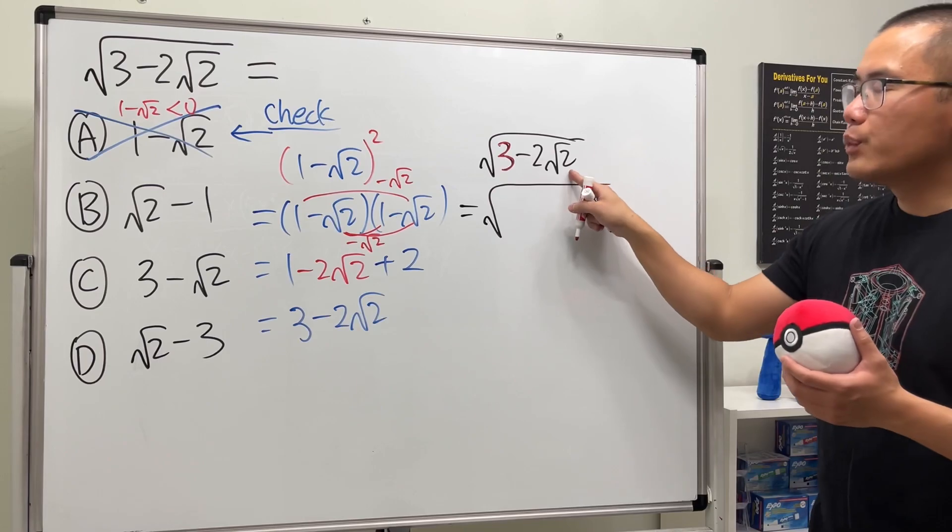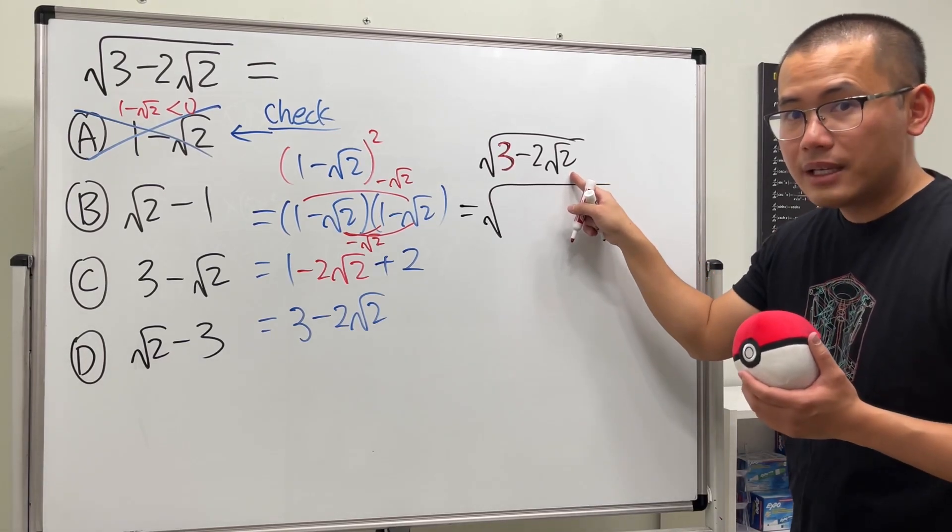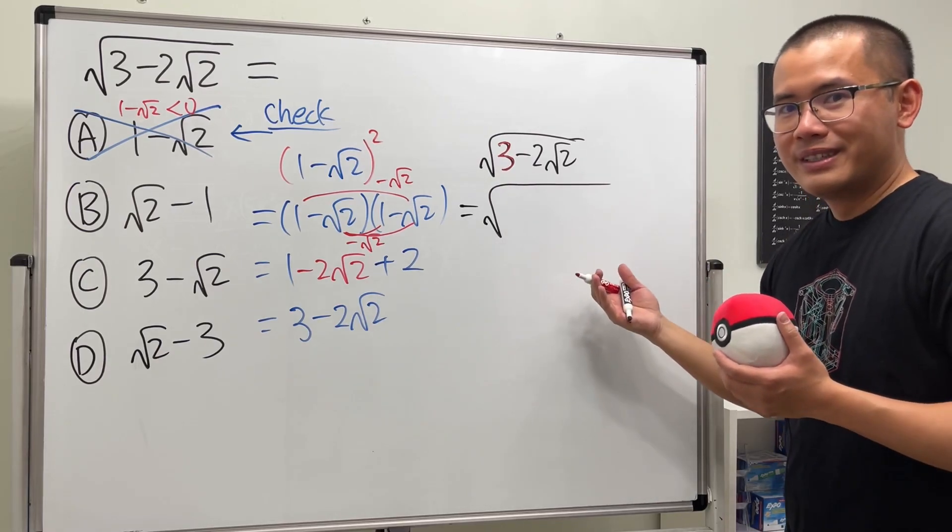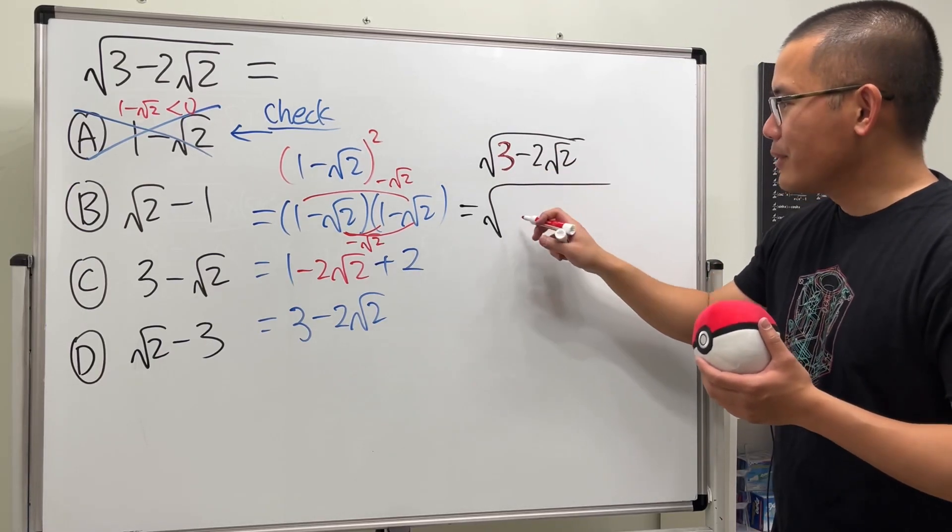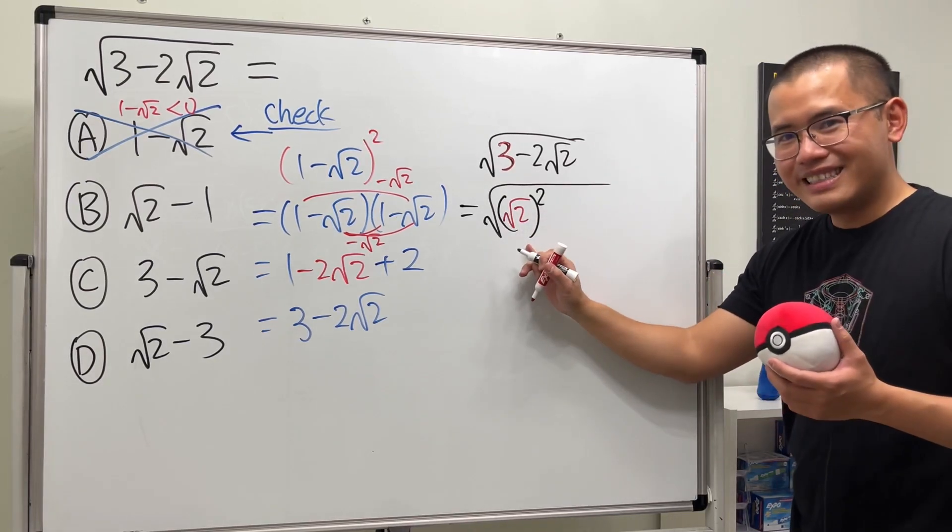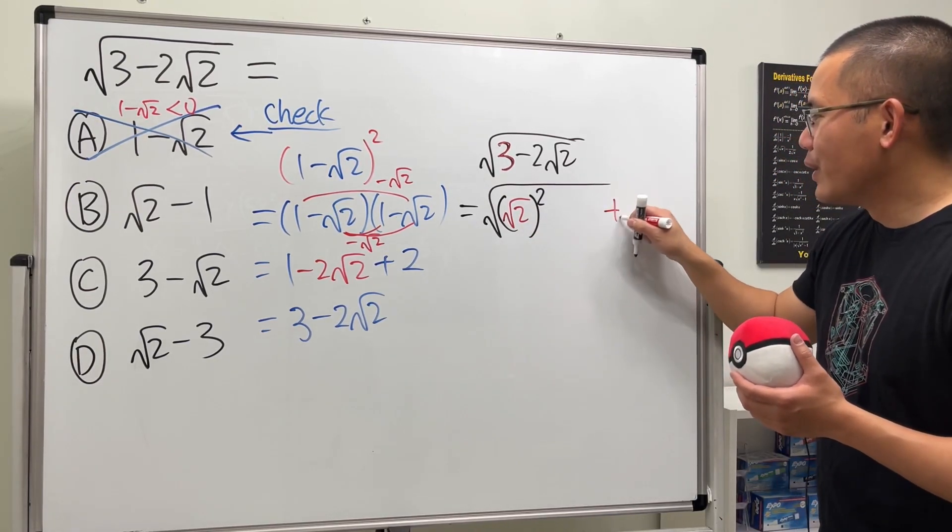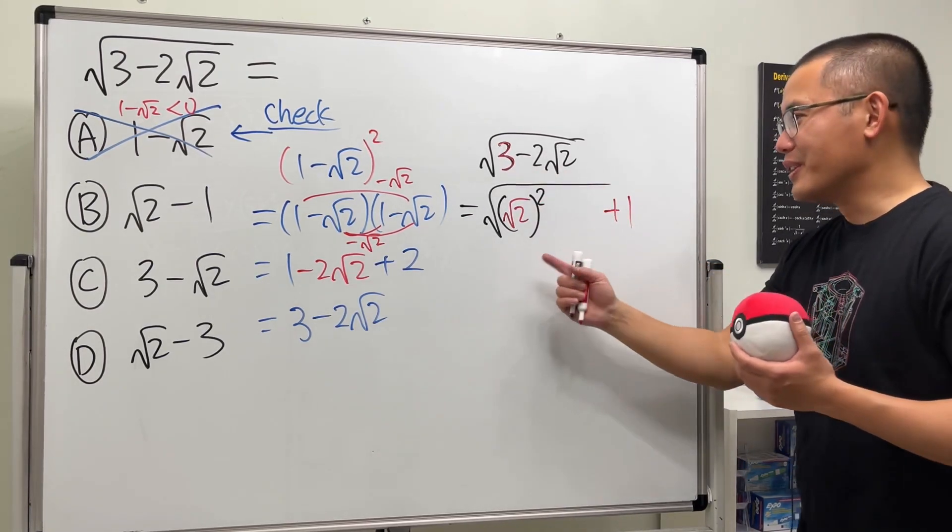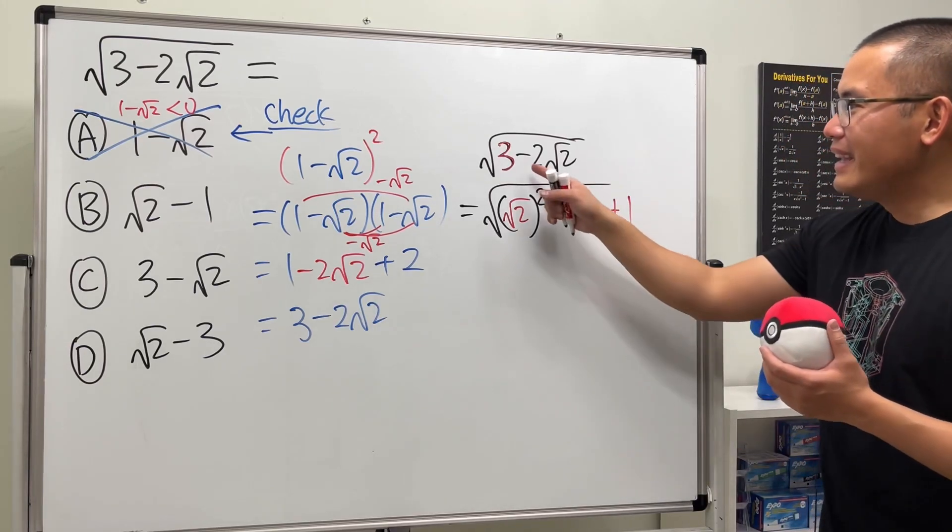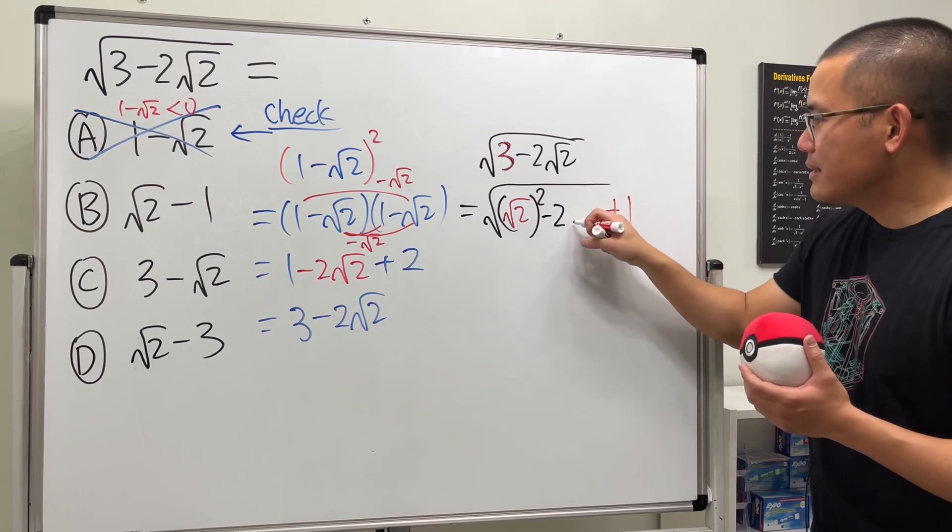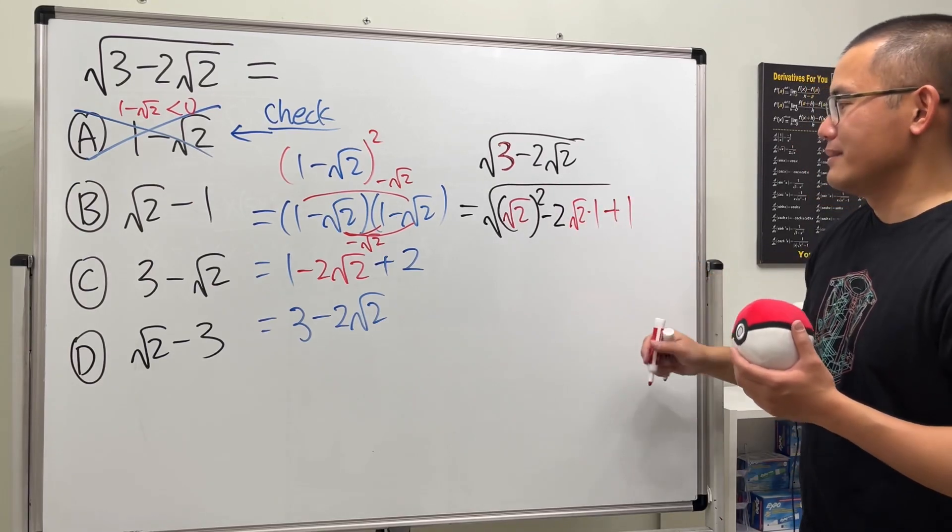Well, the key is we have this √2 right here. So I want to break this down as 1+2. The 2 I'm going to write as (√2)², so this is 2, and then I'm going to add 1 to it. This is 2+1 which is 3. In the middle, I'm going to write this as -2 times √2 times 1.